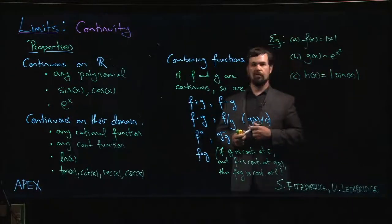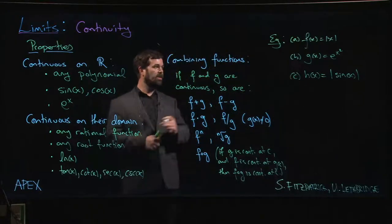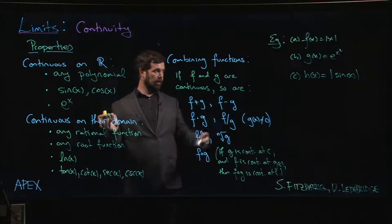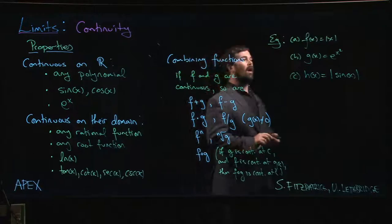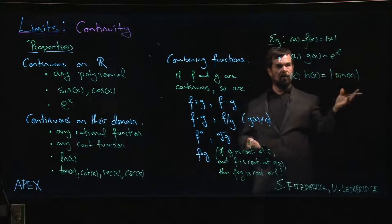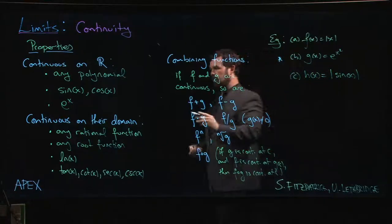I've written down a few functions on the board here which are all continuous functions—in fact, they're continuous for every real number, and we want to understand why. Now this one, B, is kind of the easiest one here. Why is this continuous? It's continuous because x squared is a polynomial, and polynomials are continuous everywhere.